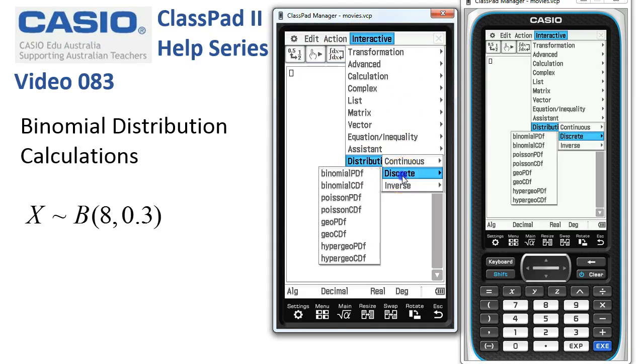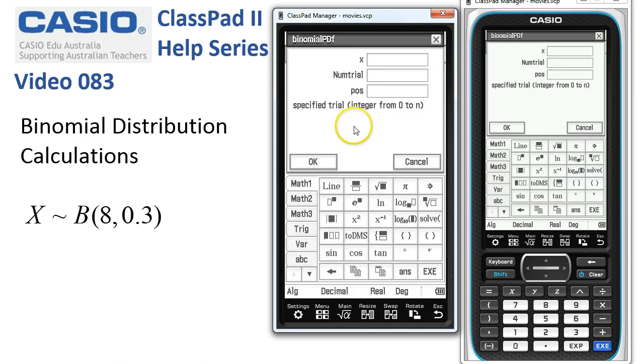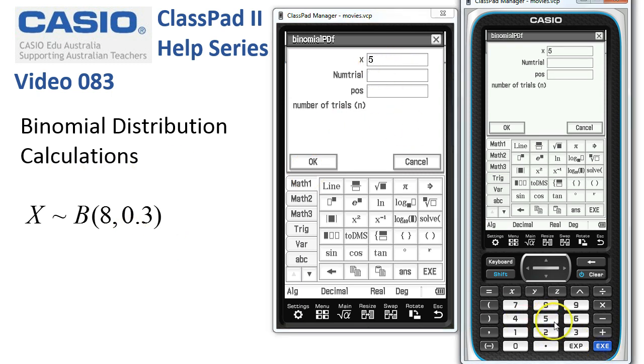Now binomial is a discrete distribution and here it is for our first calculation where we're simply interested in getting five successes out of this distribution. Then X would go in as five. We'll tap execute. We're carrying out eight trials and the probability of success is 0.3.